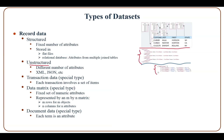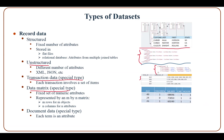Transaction data is a special type of record data in which each transaction involves a set of items, such as items a customer buys within a transaction. A data matrix is a special type of record data which contains a fixed set of numeric attributes, and can be represented by an M by N matrix, with M rows for M objects and N columns for N attributes.